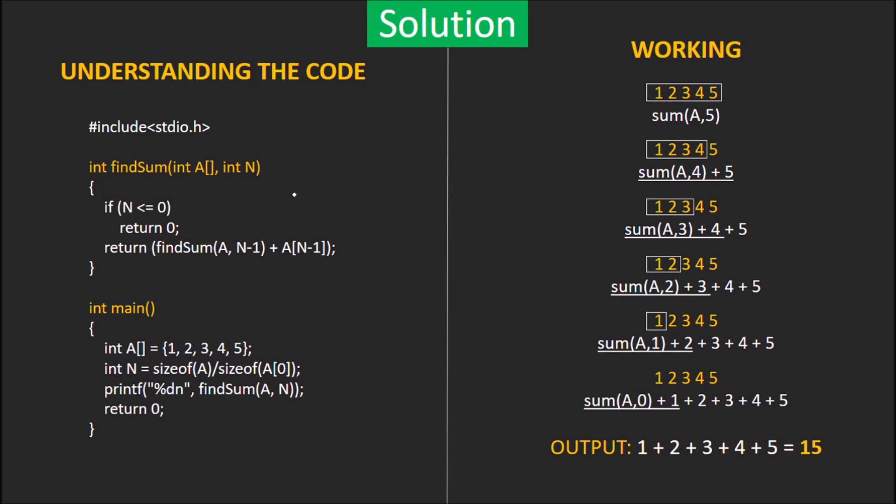Solution: Let's see the code first. A is the input array and the function findSum is called on A. Now, if the size of array is 0, the code just returns 0.